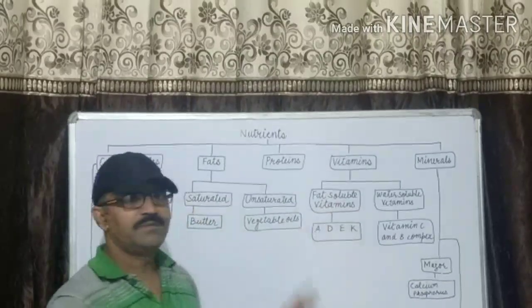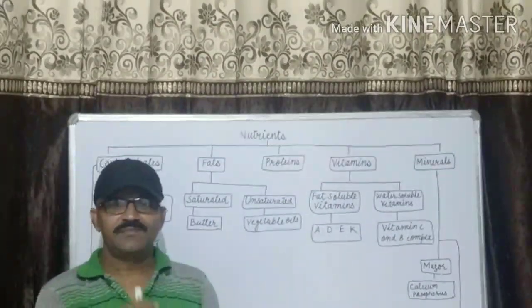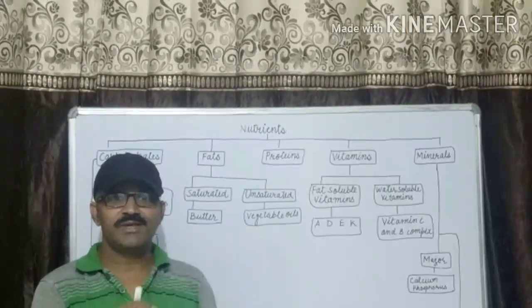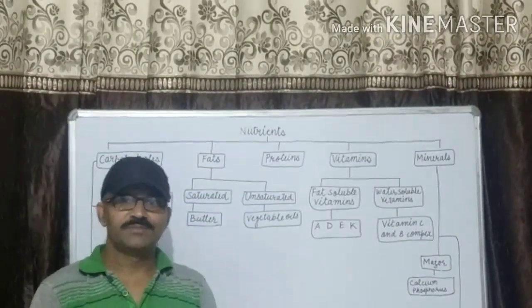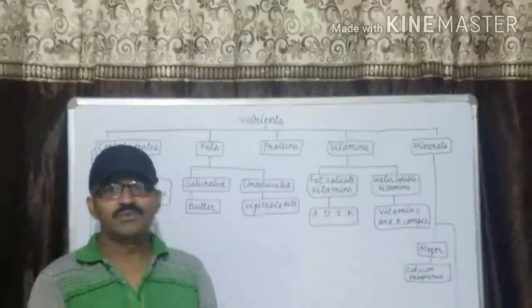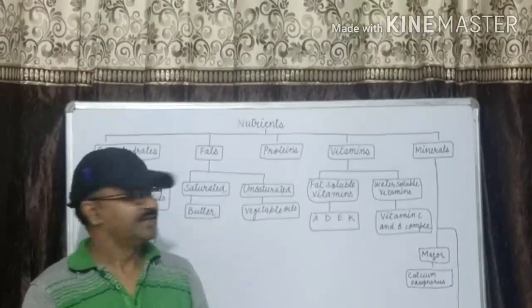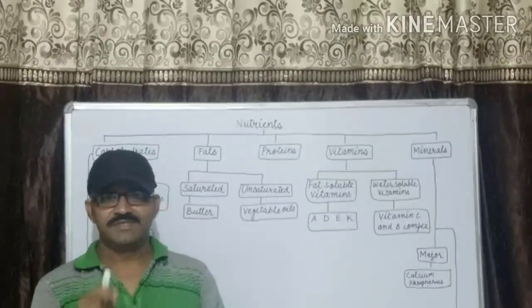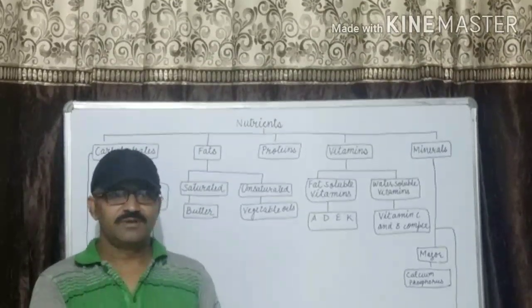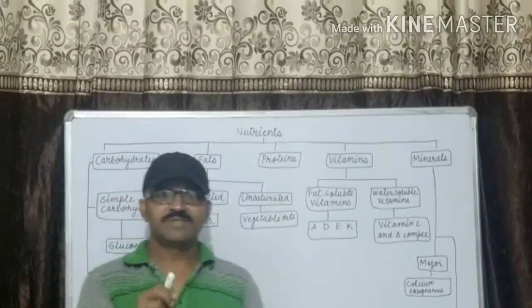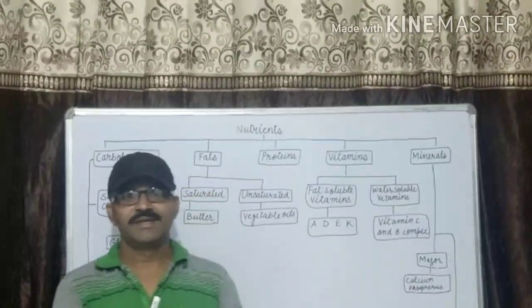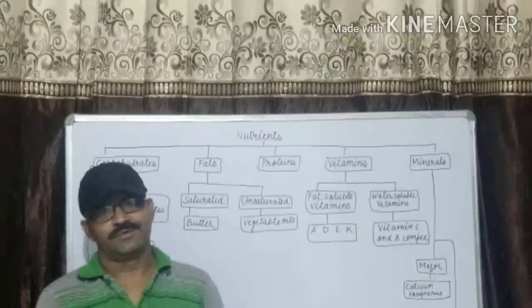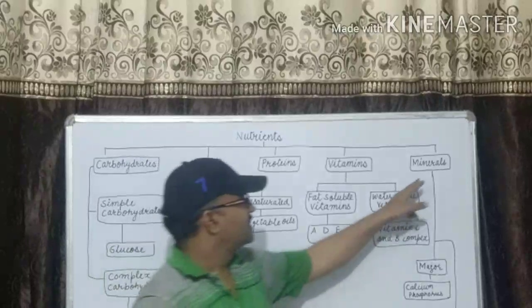Fat-soluble vitamins: vitamin A, D, E, K are stored in the fat tissues of the body and are used when needed. Water-soluble vitamins: since these vitamins are not stored in the body, these have to be supplied regularly through food.